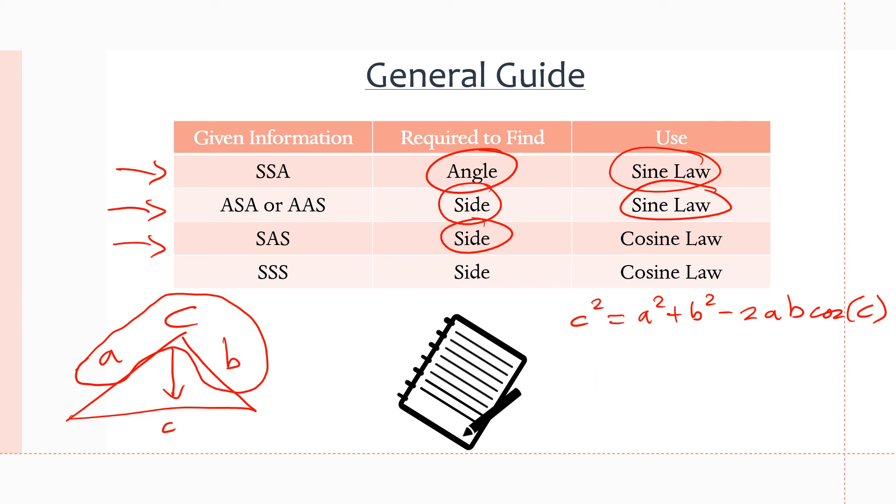So at this point, we know A, we know B, and we know angle C because we're given a side, an angle, and a side, and we can simply find side C, which is opposite to that angle. So in this case, we have two sides and an angle contained between those two sides, and we know that's one of the scenarios where we can use the cosine law.